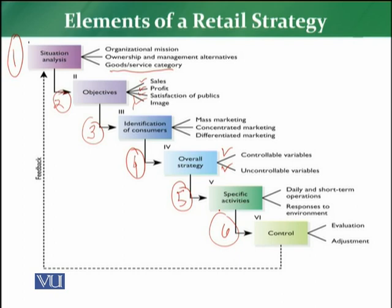The last step of retail strategy is about control. The retailer has to evaluate whether the strategy made is in line with the retailer's objectives, and if there are deviations, to make adjustments accordingly. So the retailer follows these six elements to form their retail strategy, and after creating it, implements it to create a success story.